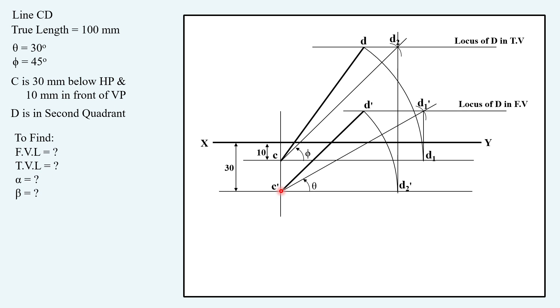If you follow the steps, then the answers will be: front view length 71 mm, top view length 87 mm, alpha will be 55 degrees, beta will be 45 degrees.